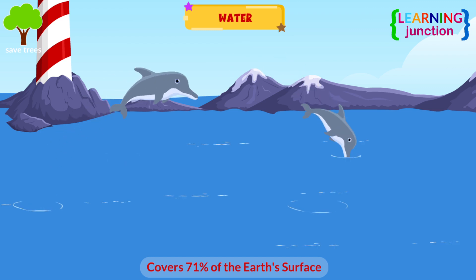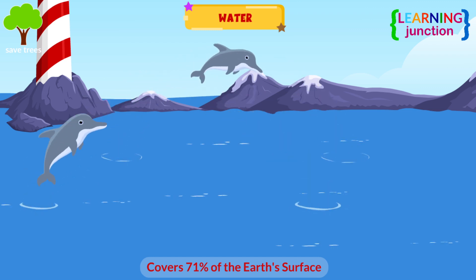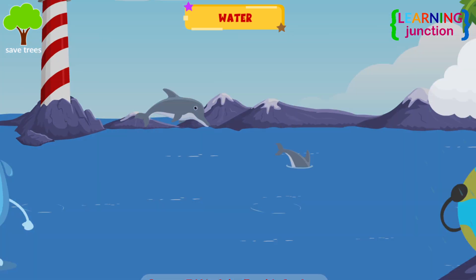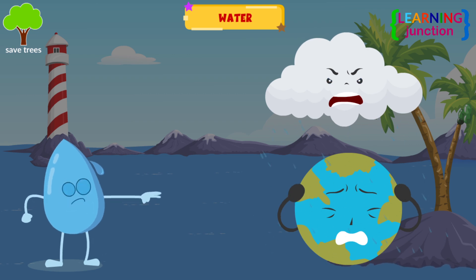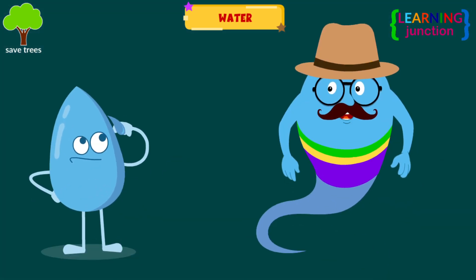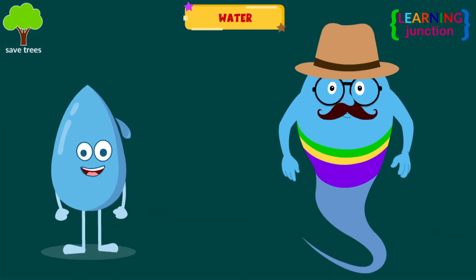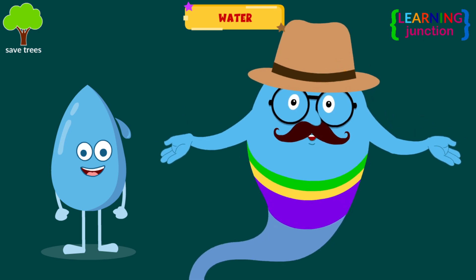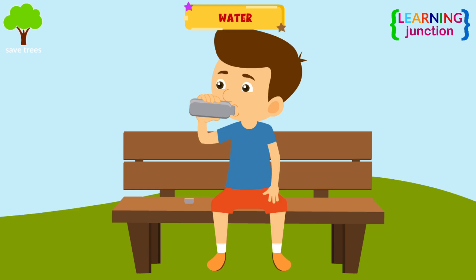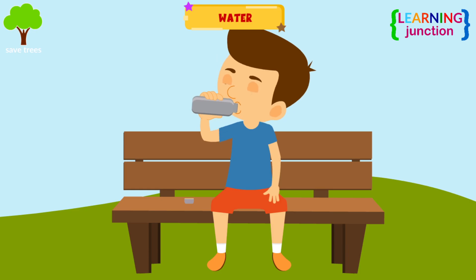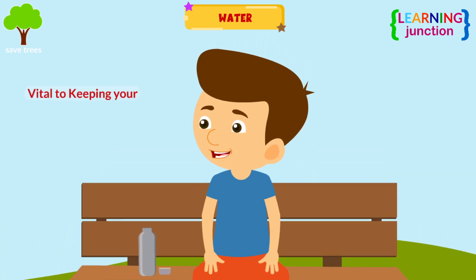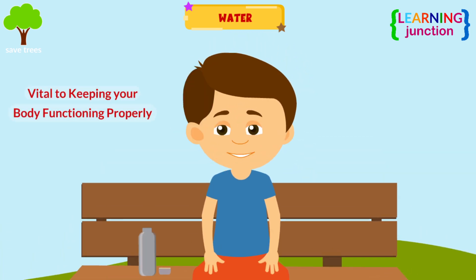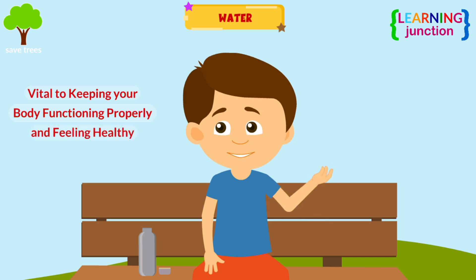Water. Water covers about 71% of the Earth's surface. Water plays a key role in regulating the planet's temperature, and without it, the Earth's surface would become much hotter and drier. Also, drinking water does more than just quench your thirst. It is vital to keeping your body functioning properly and feeling healthy.